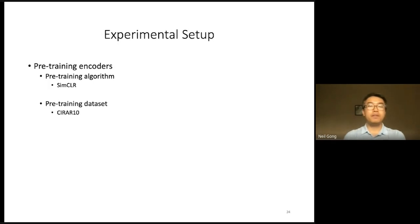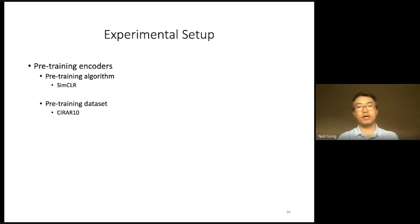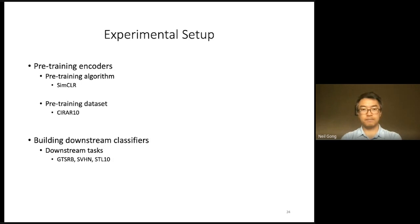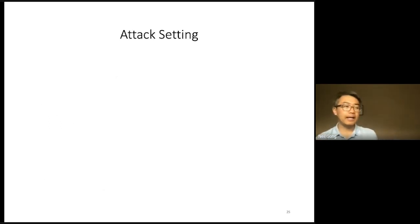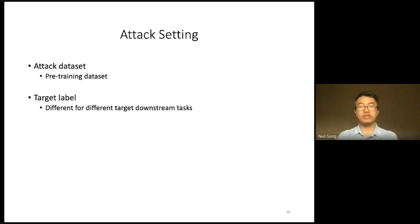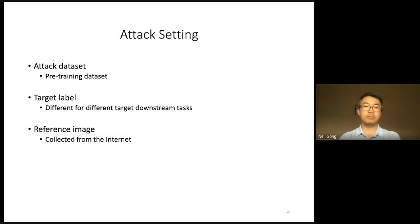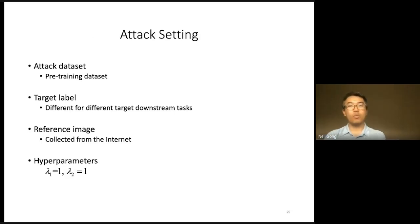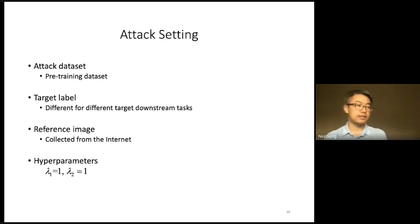In our experiment, we pre-trained an encoder using SimCLR and the CIFAR-10 dataset. We also evaluated our attack on encoders pre-trained on multiple other datasets, and the details can be found in our paper. When building downstream classifiers, we consider three downstream tasks, and we adopt a fully connected neural network as a downstream classifier. We assume the attack dataset is the pre-training dataset. The target label is different for different target downstream tasks. The reference images were collected from the public internet. The hyperparameters lambda_1 and lambda_2 are set to 1.